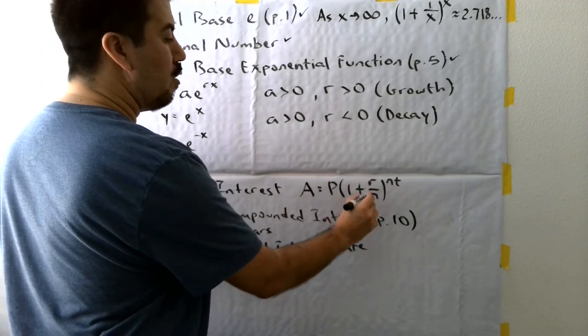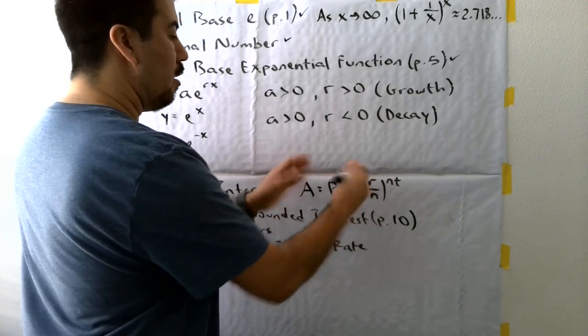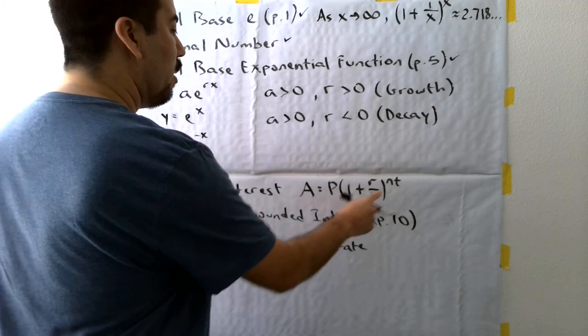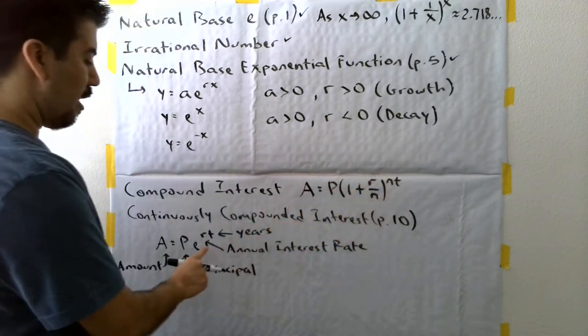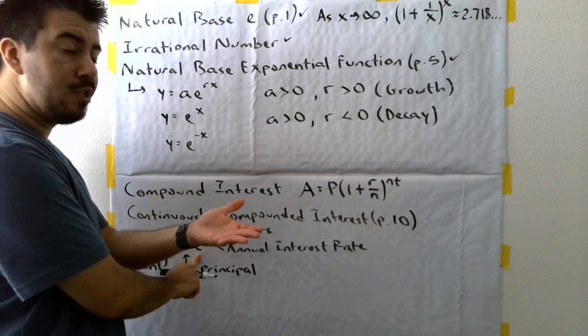So, the one plus R over N, in parentheses, raised to the N power, that is equivalent to the value E if it gets compounded continuously. So, 2.718 there.